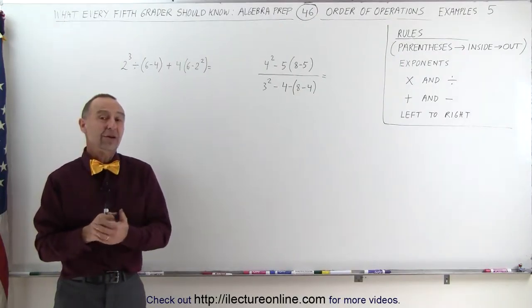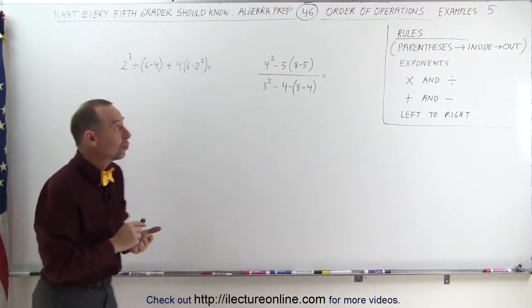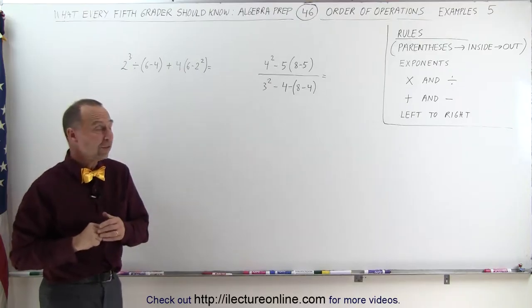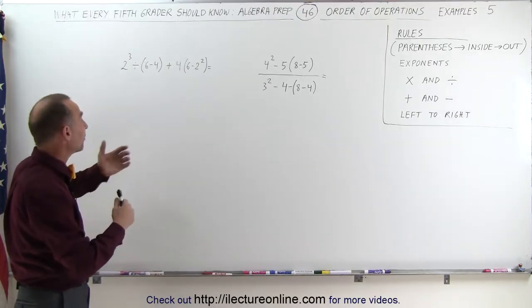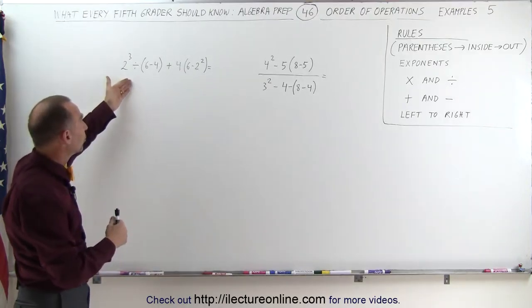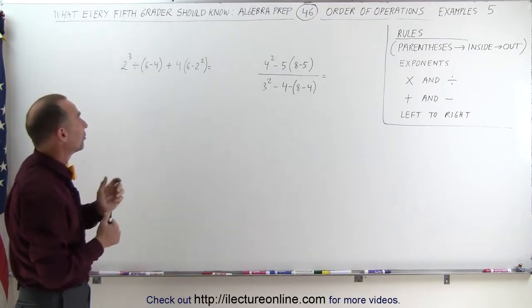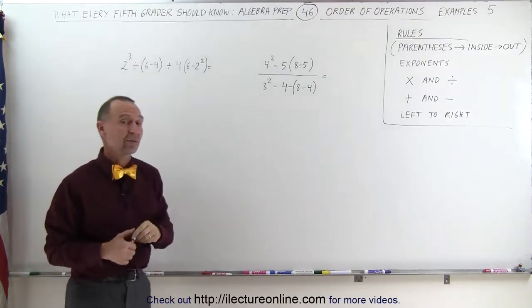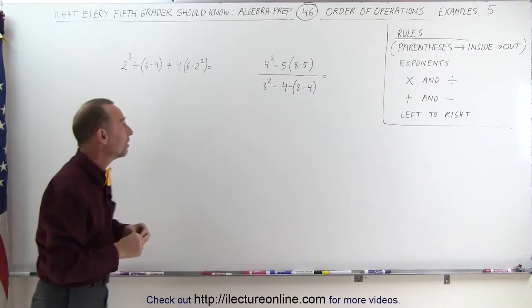Welcome to ElectronLine and here's our fifth set of examples of how to use the rules of operations. Notice that in this case we have everything: we have exponents, additions, subtractions, multiplication, divisions, and we even have rational expressions. So let's go ahead and see if we can do this.